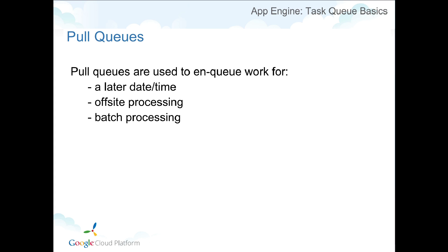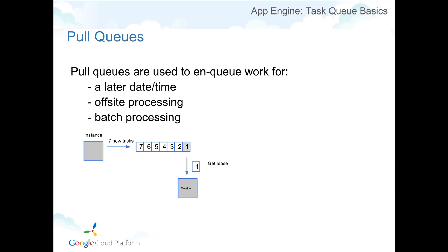A pull queue doesn't have a URL that you call — you simply have a piece of work that needs to be processed by a worker. This is great for processing something off-site or for batch operations. You put the task on the queue, and a worker comes along and says it wants to lease one of the tasks. No other worker can get a lease on that task for as long as your lease is good. You can specify a lease timeout; if you don't respond before it expires, another worker can pick up that task. Once you're done, your worker must go back and delete the task so no other worker picks it up.